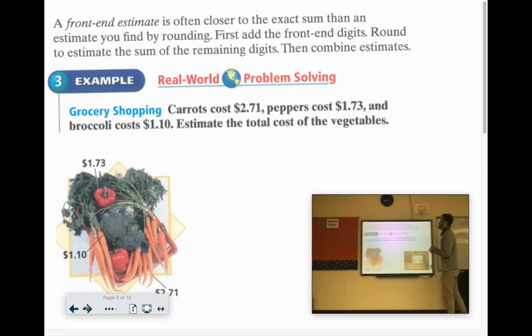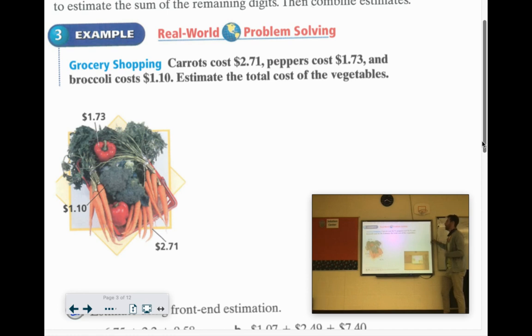Front end estimation is actually nice. So you look and you first add the front end digits. The front end estimation. Add the stuff in front of the decimal spot. And then you estimate all the decimals. Get them close. And you'll come up with a really nice estimate here. So carrots cost $2.71. Peppers cost $1.73. And broccoli cost $1.10. Estimate the total cost of the vegetables.